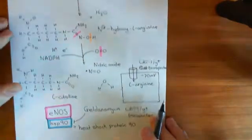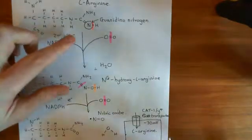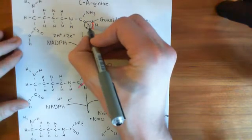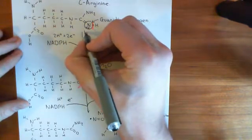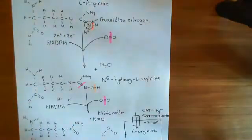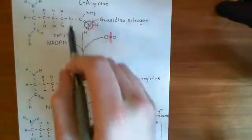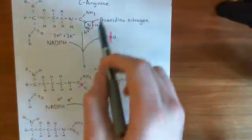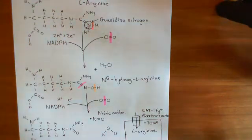L-arginine is a cationic amino acid. Let me explain why. It's because this guanadino nitrogen has a lone pair of electrons here, which can associate with a proton. And that proton will have a positive charge. So you often end up with this end of L-arginine having a positive charge. So L-arginine is often a positively charged amino acid.